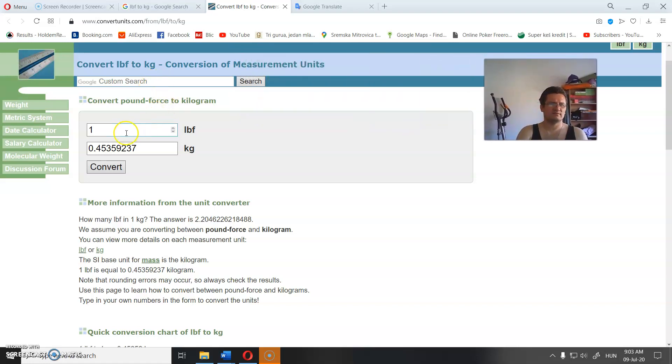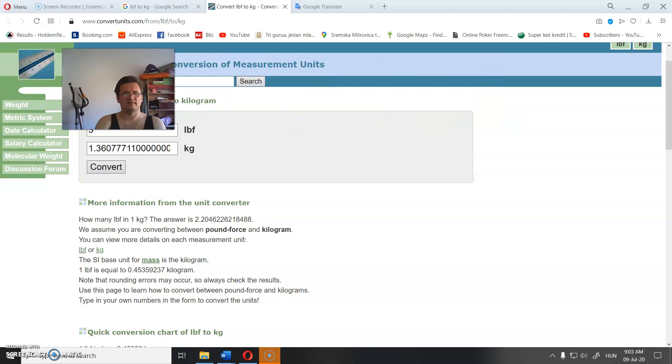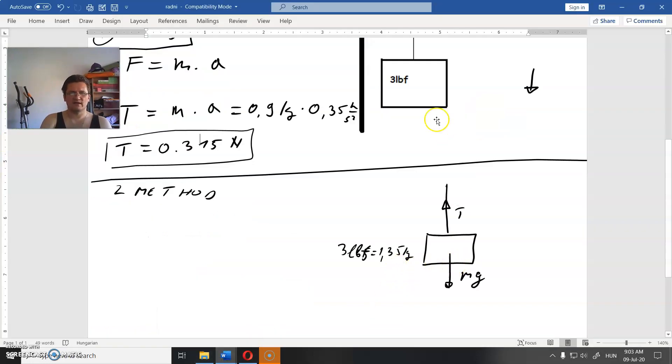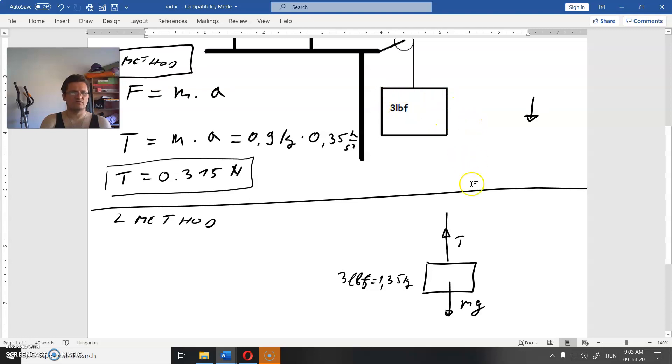When you convert LBF to kilograms, 1 is this much, and 3 is 3 times as much, 1.35 or 1.36. So this is 1.35 kilograms, and this obviously moves downwards.